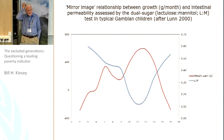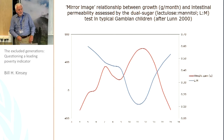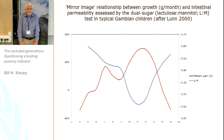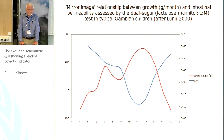Just to show you what the growth curves look like: this is Gambian data — the red is weight gain, not height gain — and the blue is the lactulose-mannitol ratio. So it's a mirror image: as that sugar leakage test goes down, growth goes up.